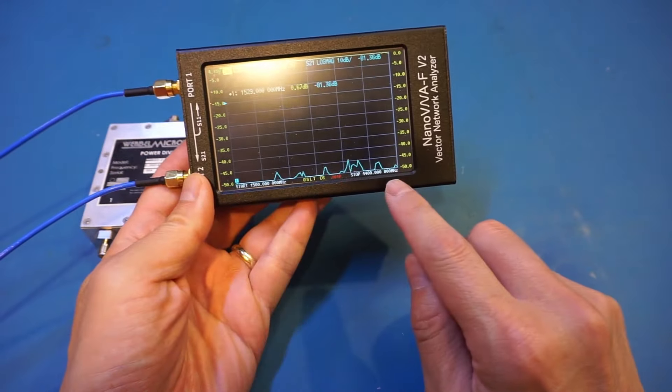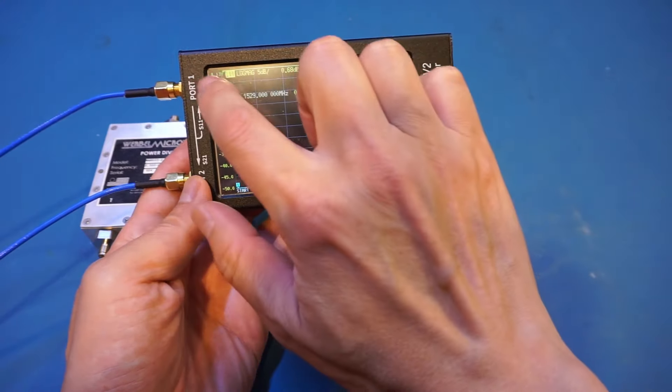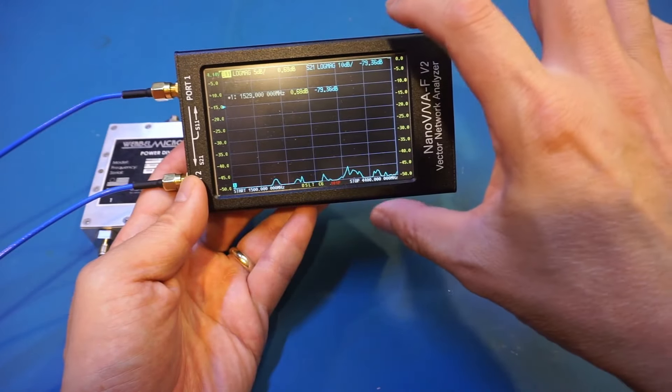As you can see here this one goes all the way up to 4.4 gigahertz. I had already calibrated the device. You can see that the S11 and S21 are pretty flat and I adjusted the scale on the side so we can see the performance of this divider a little bit better.